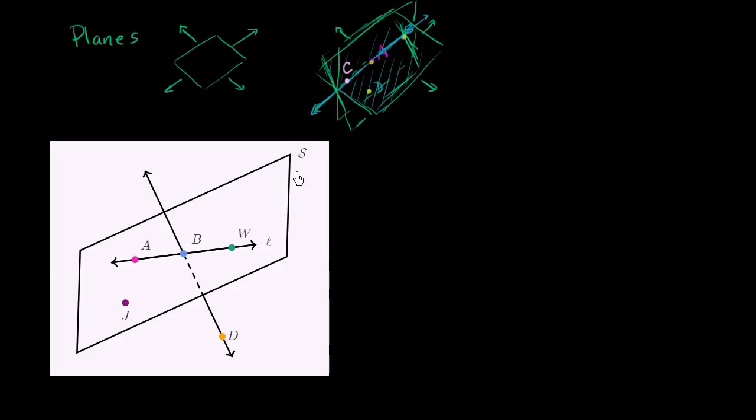So for example, right over here in this diagram, we have a plane. This plane is labeled S. But another way that we can specify plane S is we could say plane, and we just have to find three non-collinear points on that plane. So we could call this plane AJB. We could call it plane JBW. We could call it plane WJA, and I could keep going.